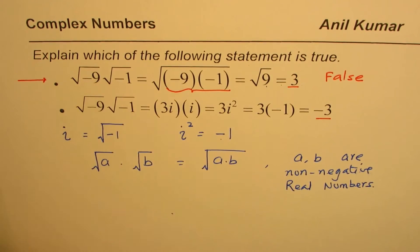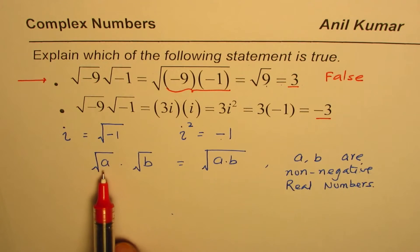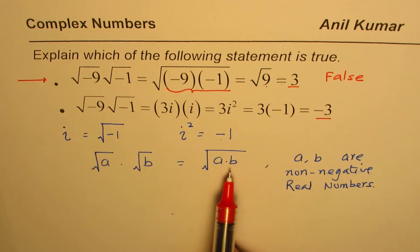These are negative numbers, minus 9 and minus 1. So we cannot apply this property here. So square root of a times square root of b equals square root of a times b only if these two numbers are non-negative.